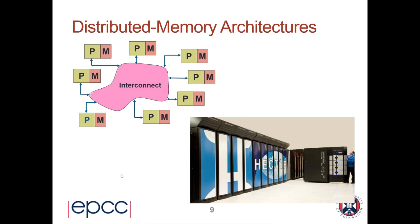We've talked so far very much in the abstract about how message passing insulates you from the physical communications network, but it's important to realize that this model maps very well onto what real supercomputer parallel computer hardware looks like. That's one of the reasons why message passing has been so successful over the past three decades. Here's a picture of a machine called HECTOR, which was the national supercomputer in the UK until the early 2010s, also located at EPCC.